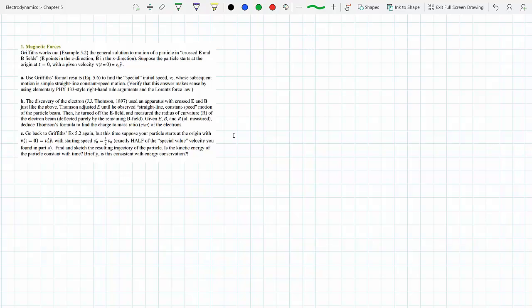Using Griffith's formal results, equations 5-6, to find the special speed v_0 whose subsequent motion is simple straight line constant speed motion. Equation 5-6 deals with the general solution to the differential equation.